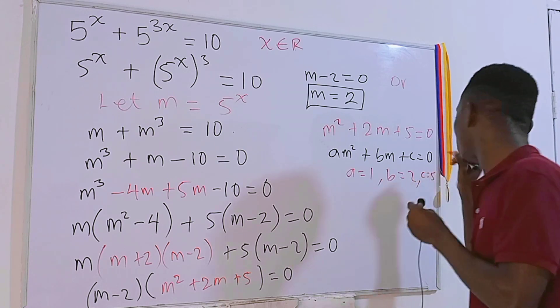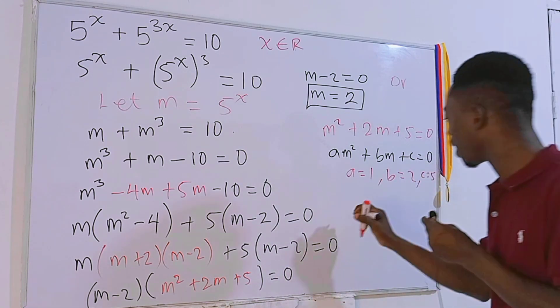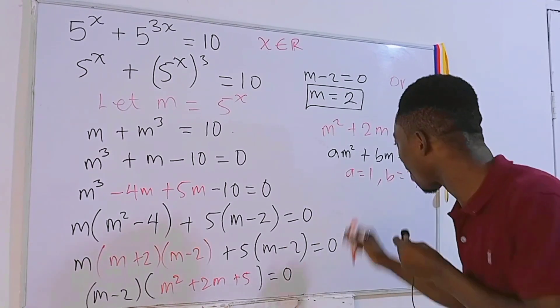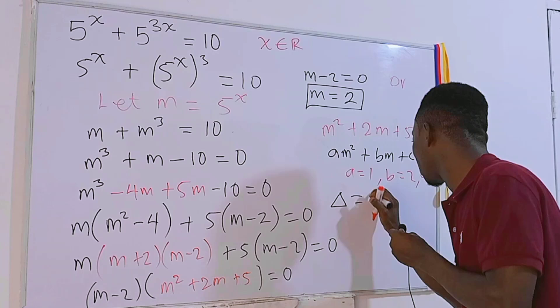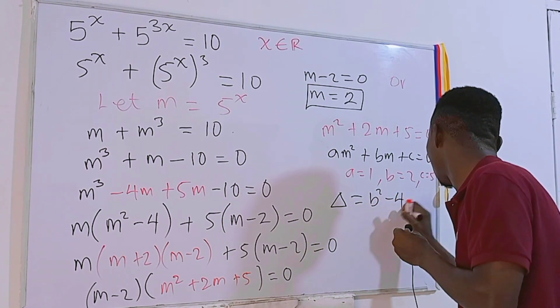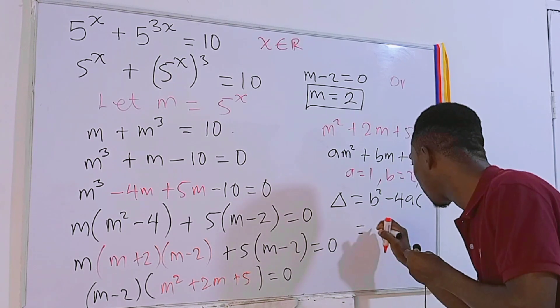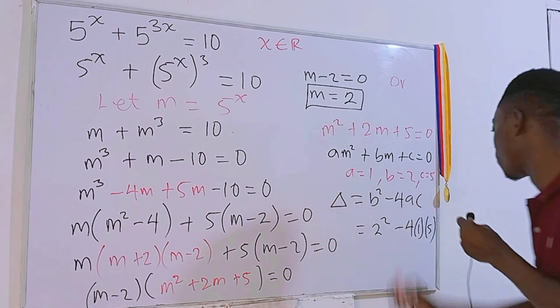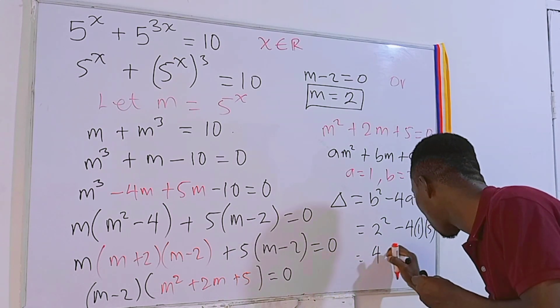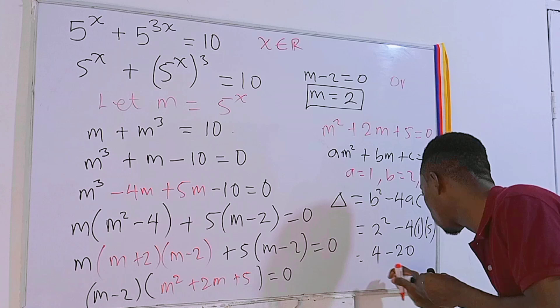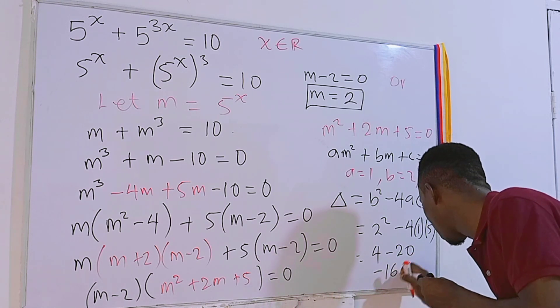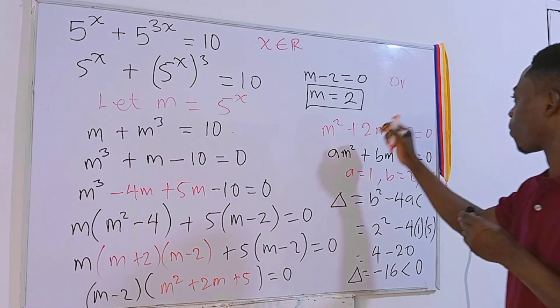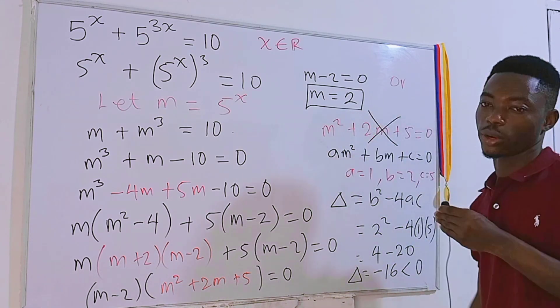Let's go ahead and use the discriminant formula, that is delta, which is equal to b² - 4ac. And this time we have b = 2 squared minus 4 times 1 times 5, and we are going to have 4 - 20, which is just -16. And of course -16 is less than 0, meaning that delta is less than 0. Therefore this equation has no real roots.